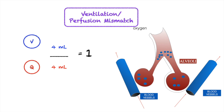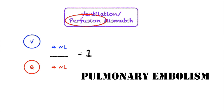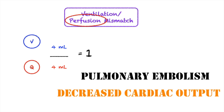In perfusion problems, the amount of gas going into the alveoli is not affected — the problem lies within the blood vessels. There is not enough blood perfusing the lungs, meaning not enough blood to receive the oxygen. This can be caused by pulmonary embolism and decreased cardiac output. If we change Q to 1 mL while V remains unchanged, we get a ratio of 4 — greater than 1. So a perfusion problem causes a high VQ mismatch.